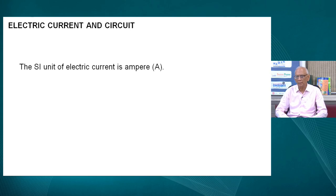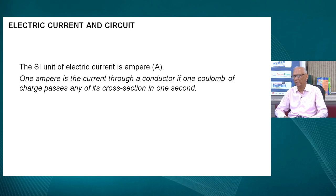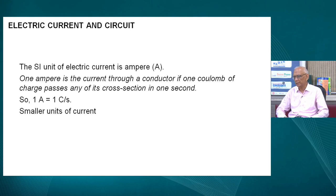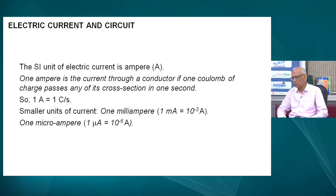The SI unit of electric current is ampere. One ampere is the current through a conductor if one coulomb charge passes through any cross-section of the conductor in one second — so one ampere equals one coulomb per second. However, we require smaller units also. One smaller unit is milliampere, which is one thousandth of an ampere — 10 to the power minus 3 ampere. Another small unit is microampere, which is one millionth of an ampere — denoted by mu — equal to 10 to the power minus 6 ampere.